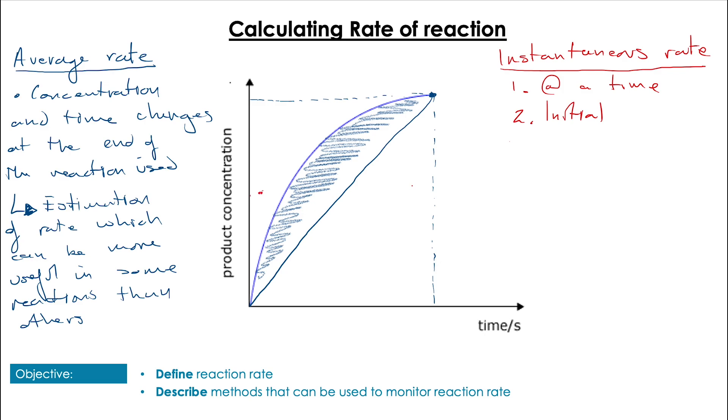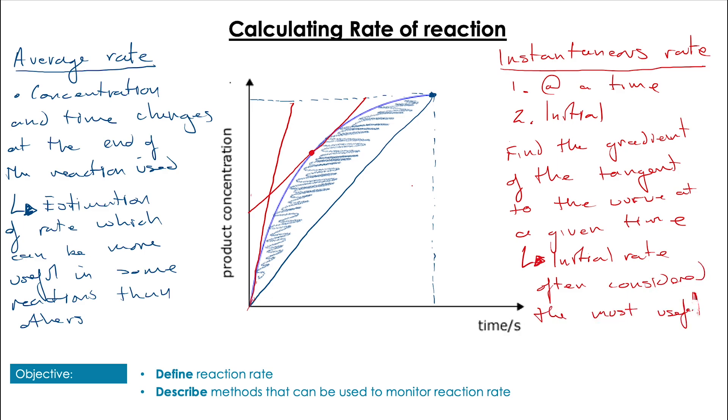Turning our attention to an instantaneous rate. First, looking at a time, all we need to do is find the time and then take a tangent to this curve at that time and find the gradient of that line. This gives us the rate of reaction at any given time. The only difference between that and the initial rate is if we take a tangent at time equals zero and find the rate of reaction there, then we have the initial rate of reaction. The initial rate is really useful because it shows us the rate of reaction just as the reaction starts when the concentrations of the reactants are highest. It's often considered the most accurate way of measuring the rate of reaction.